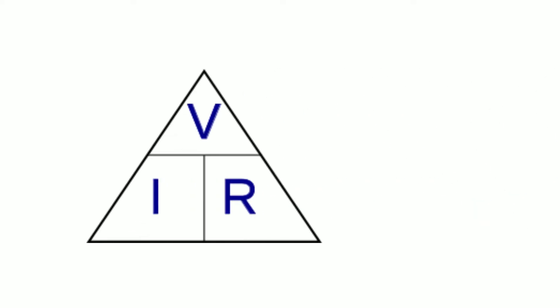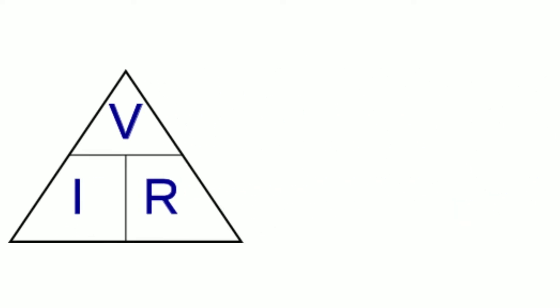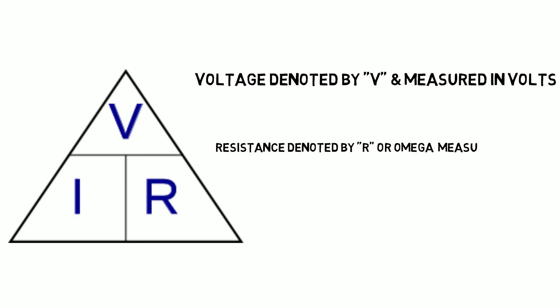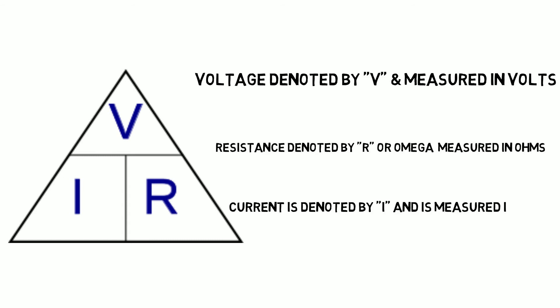Ohm's law describes the link between current, resistance and voltage. If we know the value of two of these properties then we can calculate the third using Ohm's law. In engineering, voltage is denoted as V and measured in volts. Resistance is denoted by R or omega and measured in ohms, and current is denoted by I and is measured in amps.